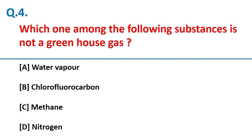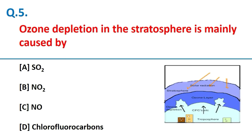Which one among the following substances is not a greenhouse gas? Nitrogen. Ozone depletion in the stratosphere is mainly caused by chlorofluorocarbon.